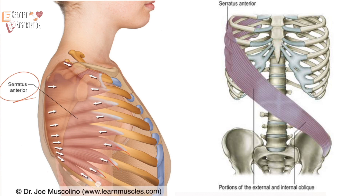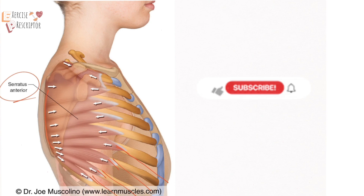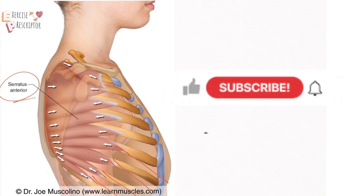The lower four to five slips of the costal attachment of the serratus anterior directly blend and integrate with the external abdominal oblique muscle, forming the spiral line. The serratus anterior also blends with the rhomboids on the anterior side of the scapula — this is also part of the spiral line. Hope you learned something new — don't forget to like this video and subscribe to the channel.